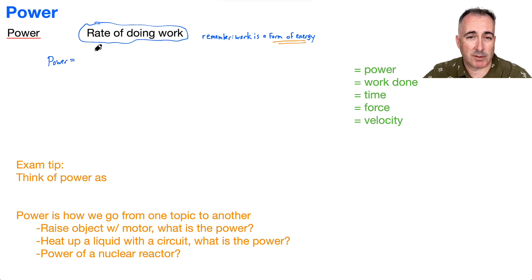So power is just going to be work done over time. Now that's not the official version. The official version from your data book goes like this. Capital P is going to be equal to delta W over delta T.